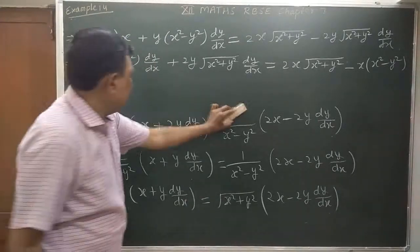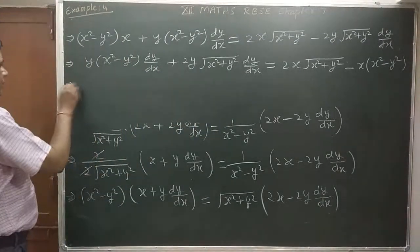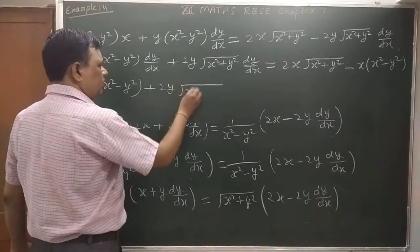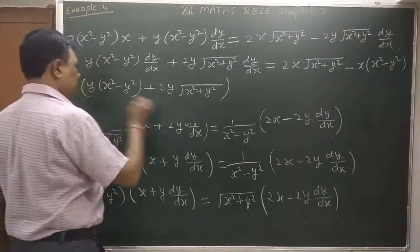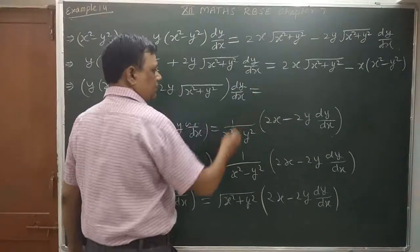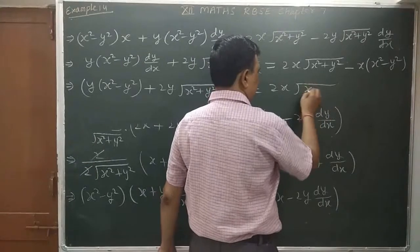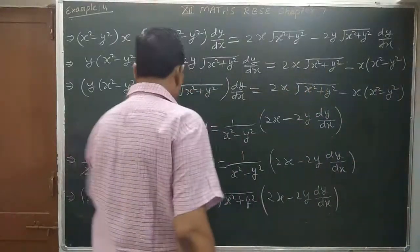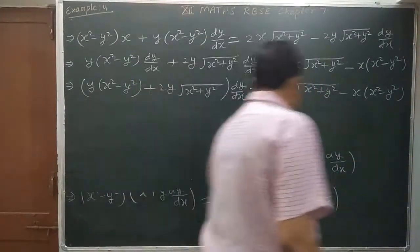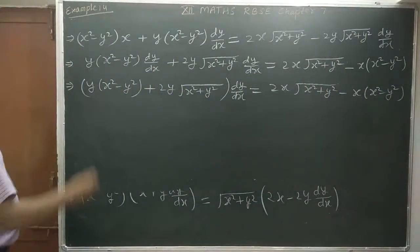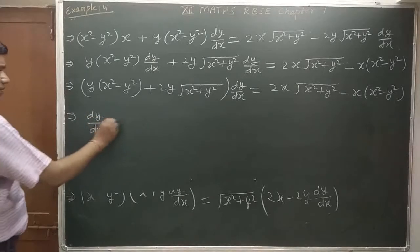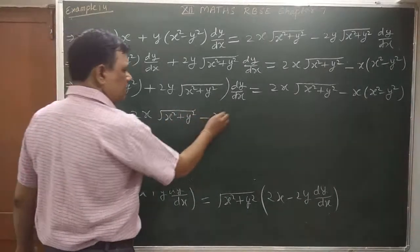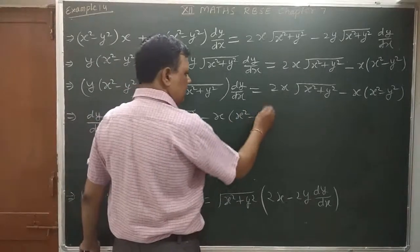Simplifying: (x² - y²) dy/dx + 2y·root(x² + y²) dy/dx minus (x² + y²) equals 2x·root(x² + y²) minus x(x² - y²). Collecting dy/dx: [y(x² - y²) + 2y·root(x² + y²)] dy/dx equals the right-hand side.